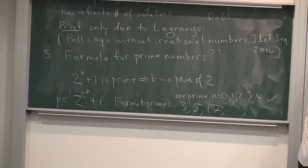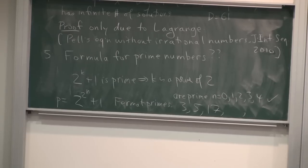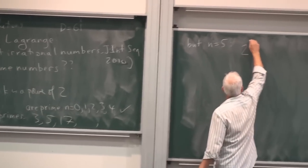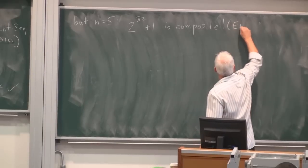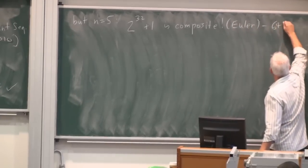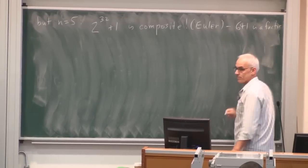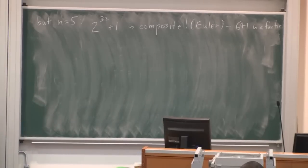But there is reason to believe that he was doubtful about this later on. In fact, that claim is false. The next one in the list is, in fact, not prime. But it's not so easy to figure that out. So those numbers are prime, but n equals 5. We're talking about 2 to the 32 plus 1 is composite.